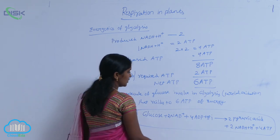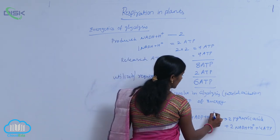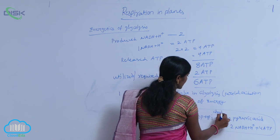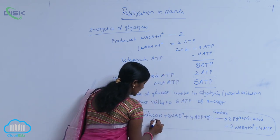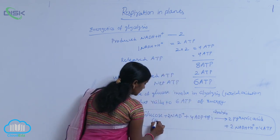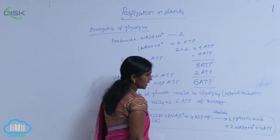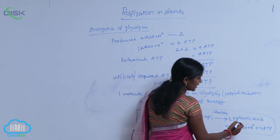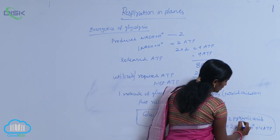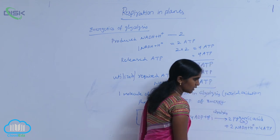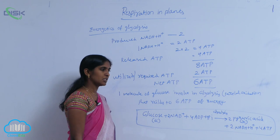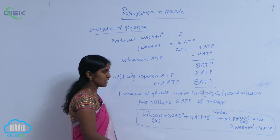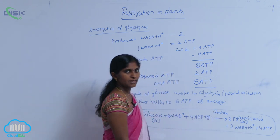During glycolysis, glucose is a hexose sugar. The hexose sugar is converted into triose sugars — triose acids — meaning three-carbon-containing acids, which are pyruvic acids.